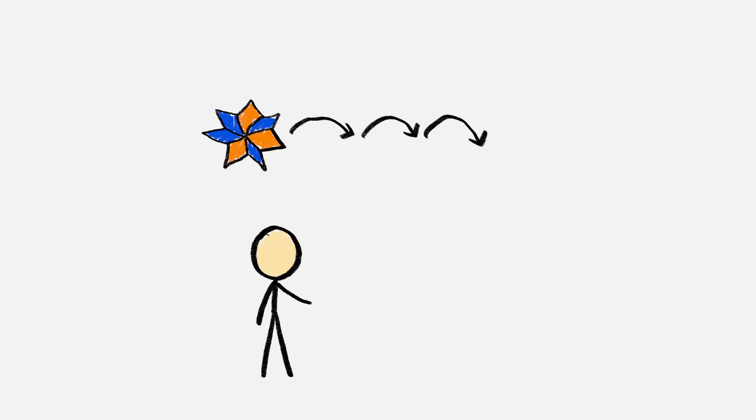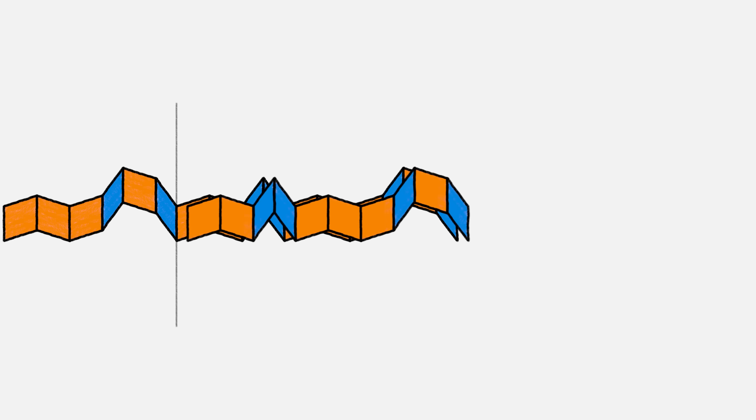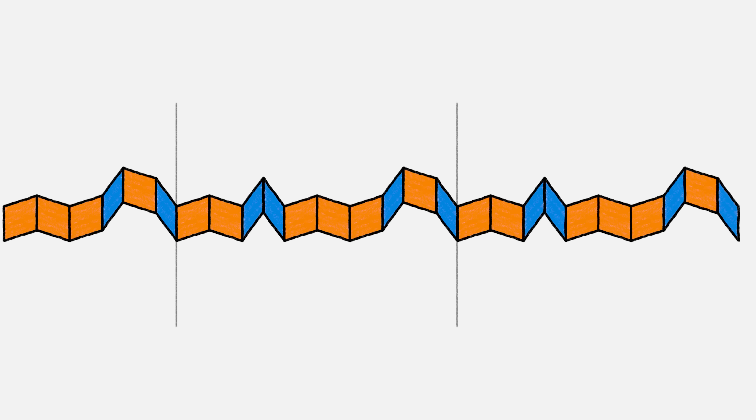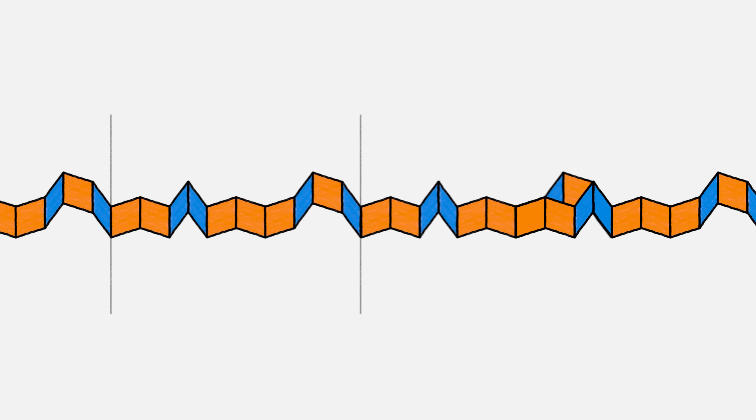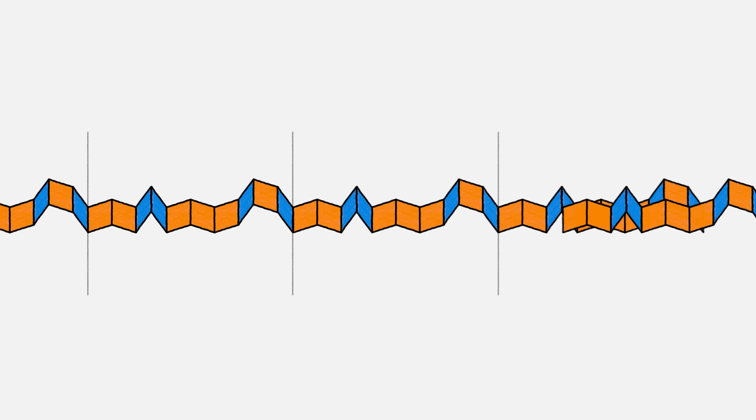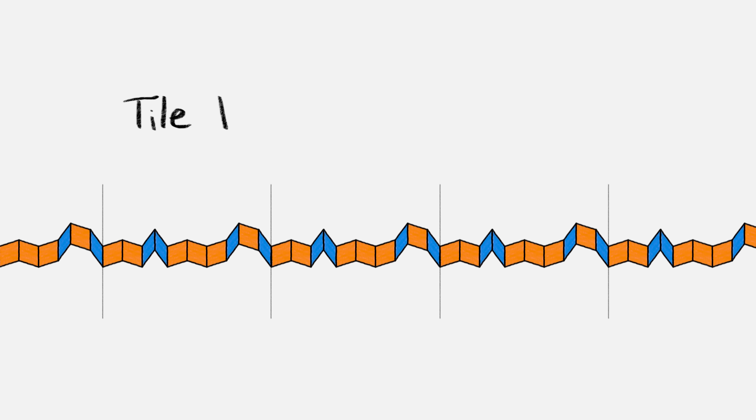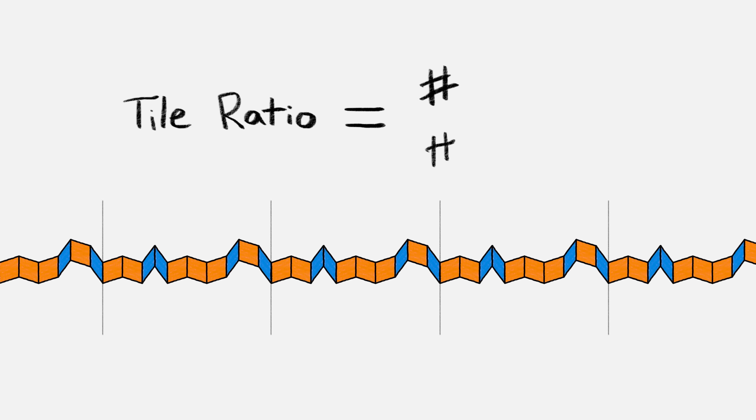But there's one more thing. Remember how I said that pentagrids helped me see why these patterns never repeat themselves? This isn't a proof, but it at least gives you a flavor of the non-repetition. So start with a single ribbon. If the ribbon ever did repeat itself, then after a certain point, you'd have the same pattern of thin and wide tiles over again, and again, and again. So the ratio of thin to wide tiles would be a rational number, the number of thin tiles in a given chunk divided by the number of wide tiles. In this example,